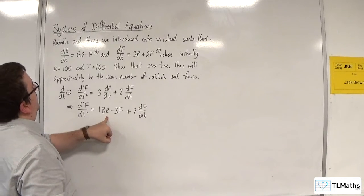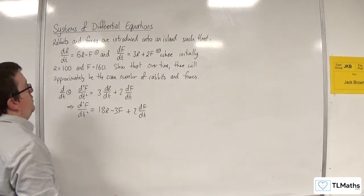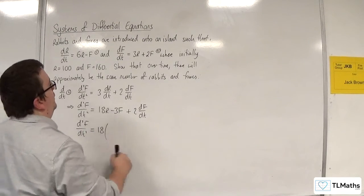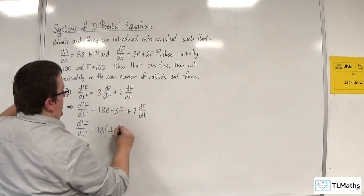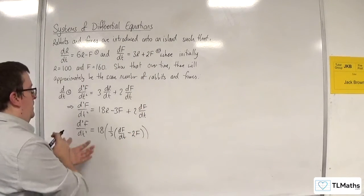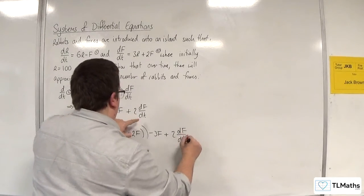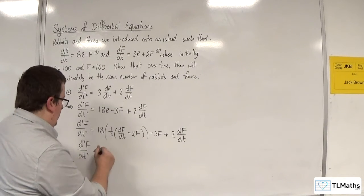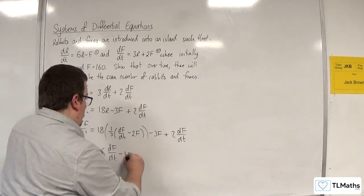Now I need to replace r. Rearranging equation 2, r = (1/3)(df/dt) - 2f. Substituting into the expression, d²f/dt² = 18 × [(1/3)(df/dt) - 2f] - 3f + 2(df/dt), giving 6(df/dt) - 12f - 3f + 2(df/dt).